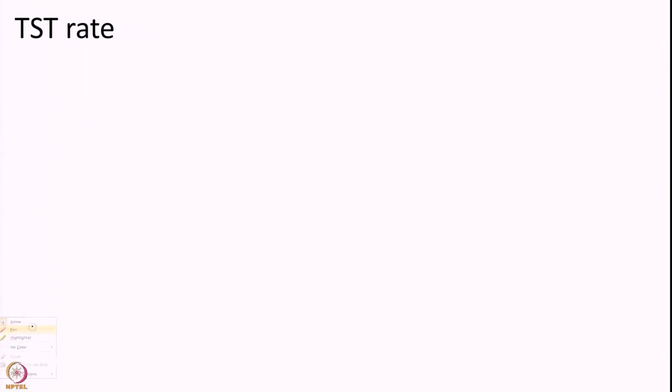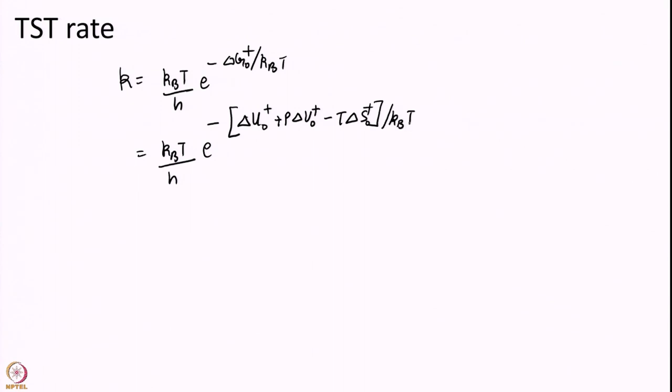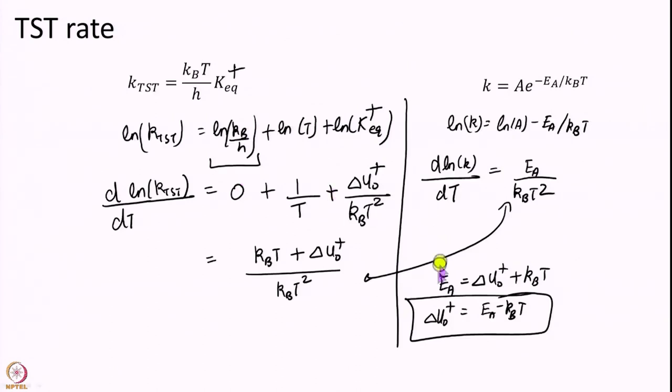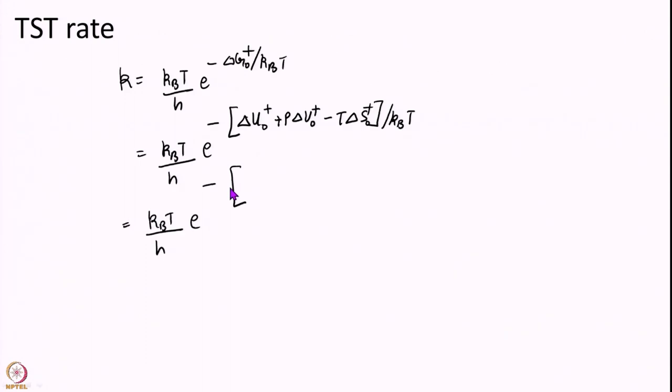So, but well, so what? K we had shown is equal to KT over H e to the power of minus delta G naught over KT. But delta G is given by delta U naught plus P delta V minus T delta S. But delta U naught in the last slide we showed is related to activation energy. So, delta U naught we showed is equal to EA minus KT. So, we are going to put that here: EA minus KT plus P delta V naught minus T delta S naught over KT.